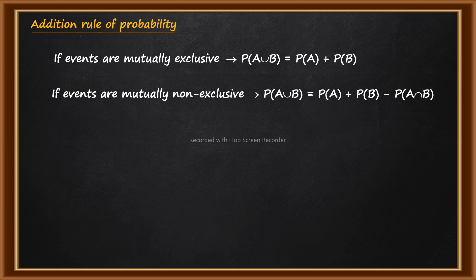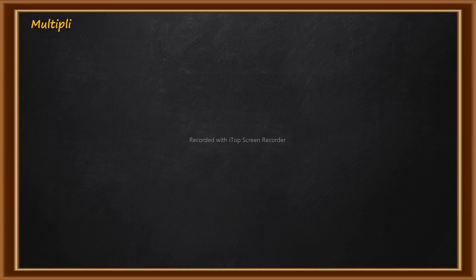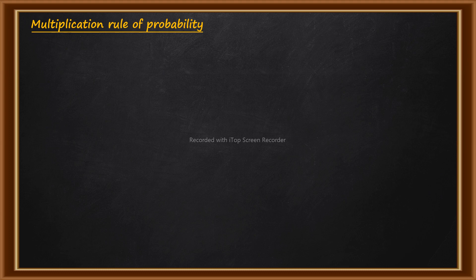Now let us talk about the multiplication rule of probability. When you consider the multiplication rule, it also has two categories. Multiplication rule is applied when we have to calculate the probability of both events — event A and event B. In that scenario, we check whether the events are independent or dependent.